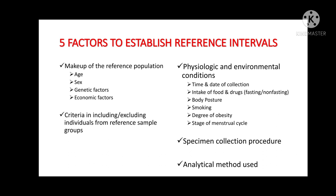Once tested, the results are compared. The highest and lowest values — called the outliers — are then eliminated, and the range is established from the remaining sample values. Third is physiologic and environmental conditions, including the time and date of collection, intake of food and drugs, fasting or non-fasting status, body posture during blood collection, smoking, degree of obesity, and the stage of the menstrual cycle. Fourth is the specimen collection procedure, and fifth is the analytical method used to test the analyte.